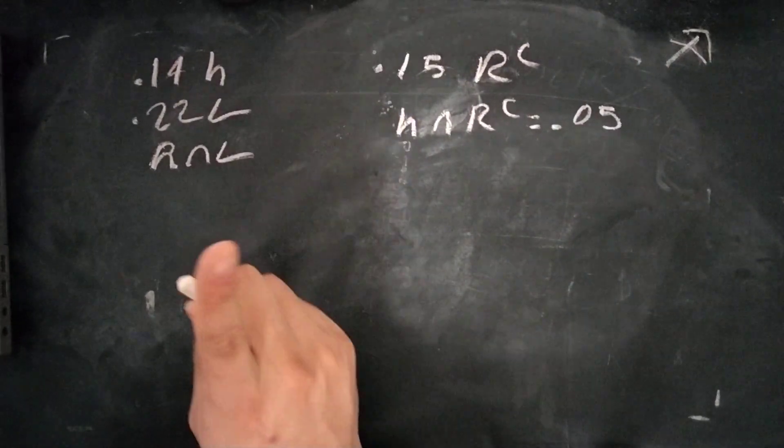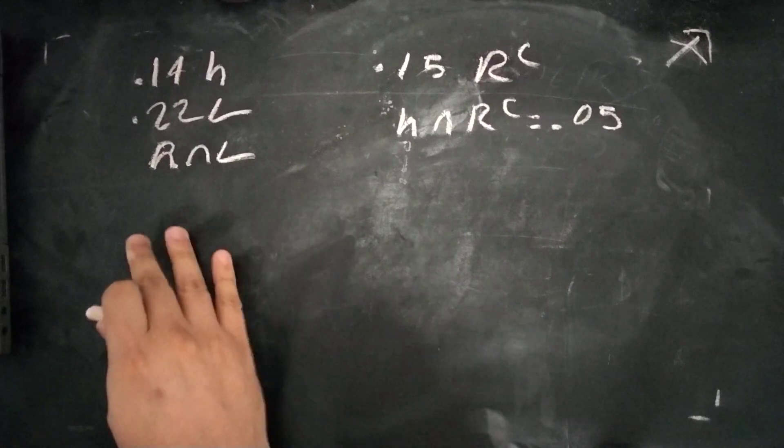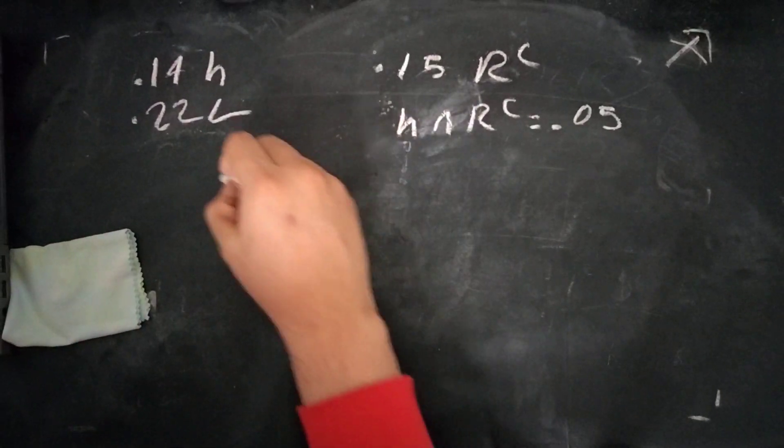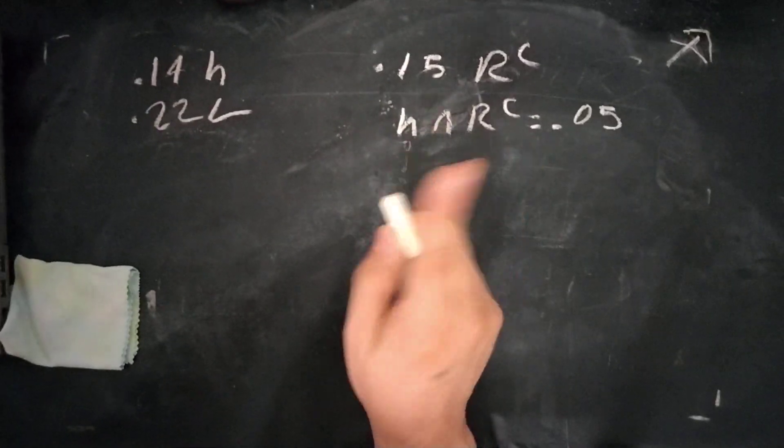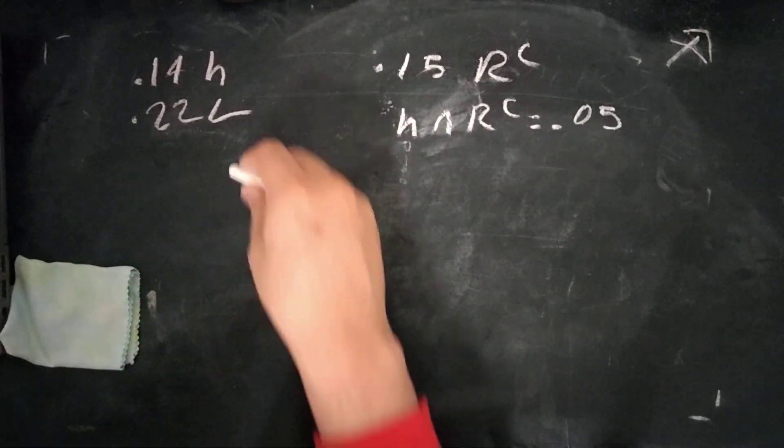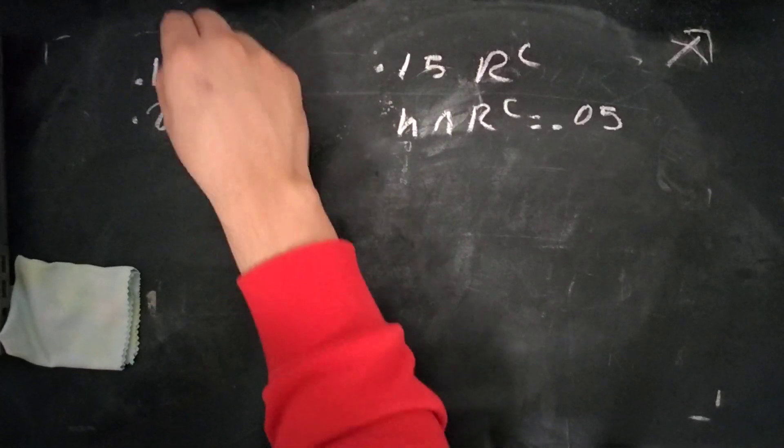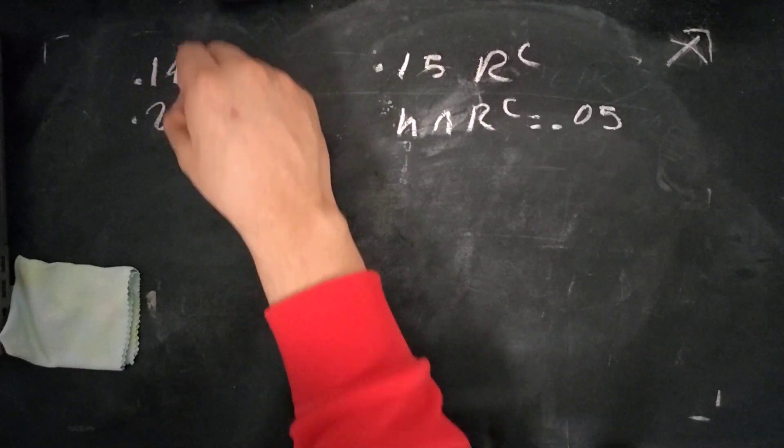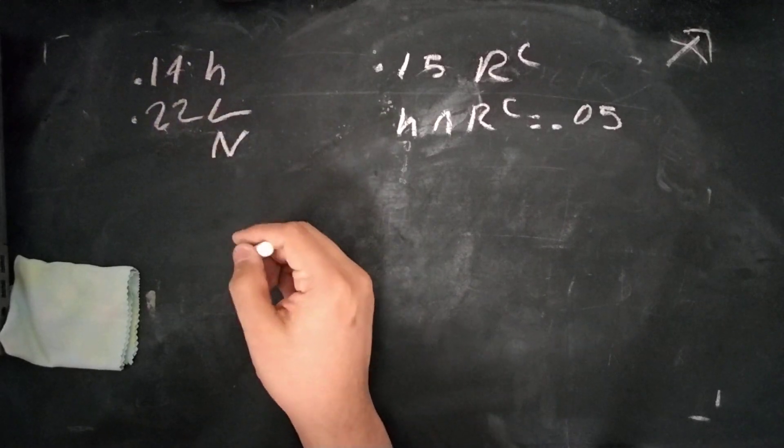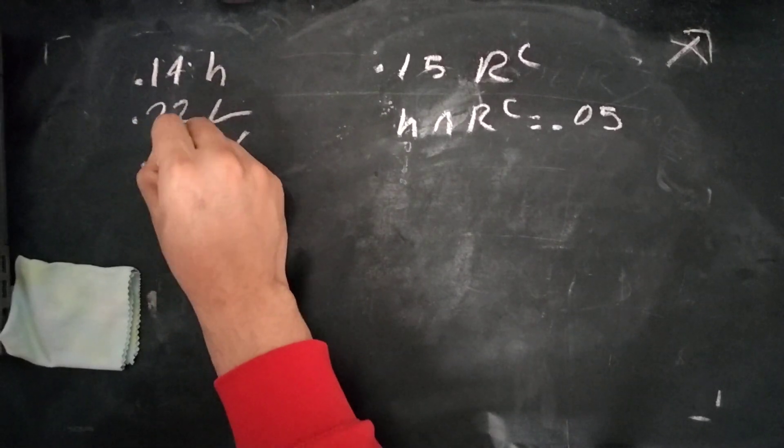And we know people that have normal blood pressure, one-eighth of those have an irregular heartbeat. We don't necessarily have that at the moment, but we can solve that pretty easily. So we add 14 plus 22, that's 36. 100 minus 36 is 64, so 64% of people have normal blood pressure.